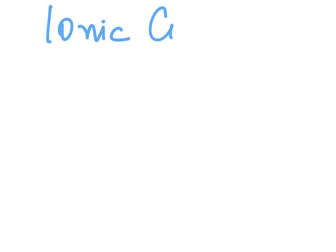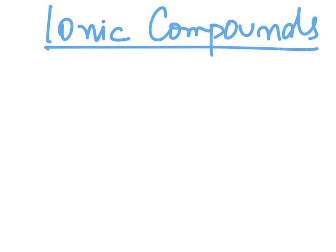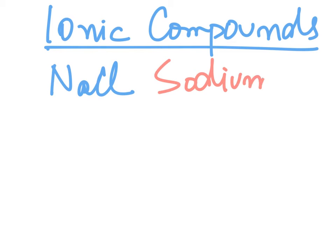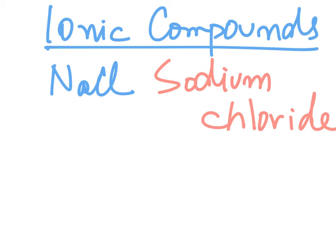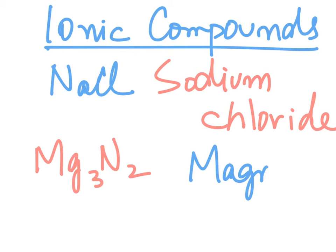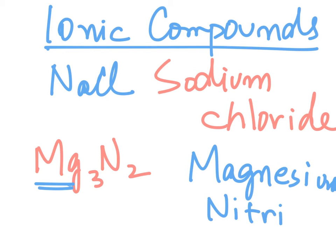In naming ionic compounds, we do not use mono, di, tri, etc. For example, Mg3N2 — we simply name the first metal part as magnesium, and then nitrogen becomes nitride. We do not say mono, di, tri and so on. It is simply magnesium nitride.